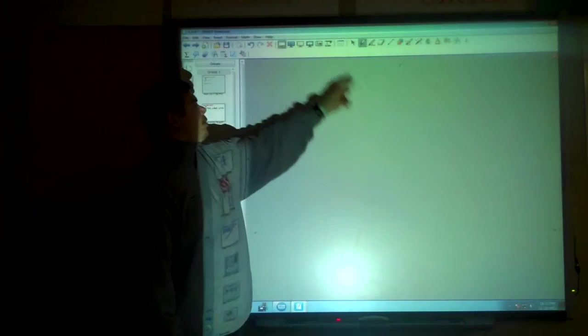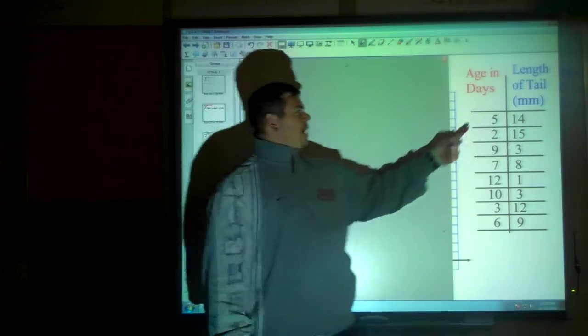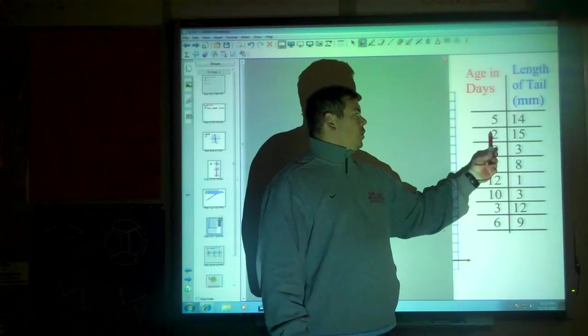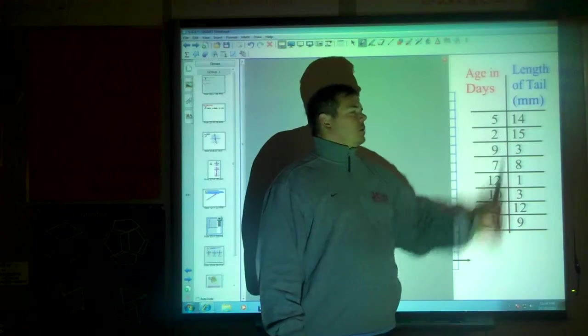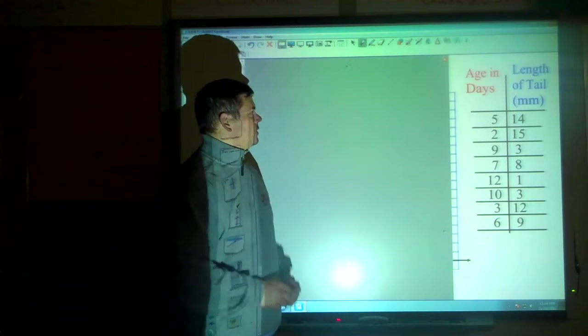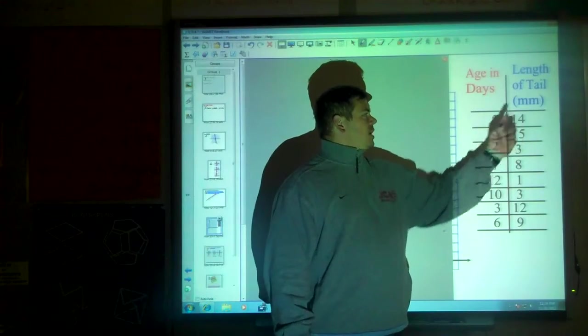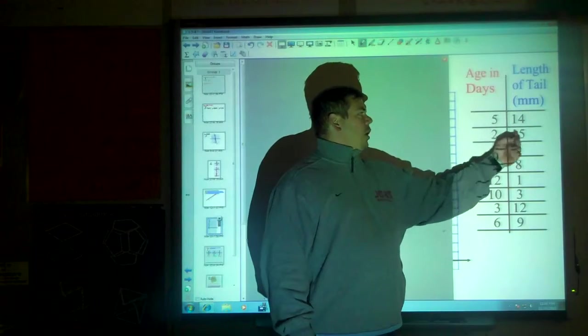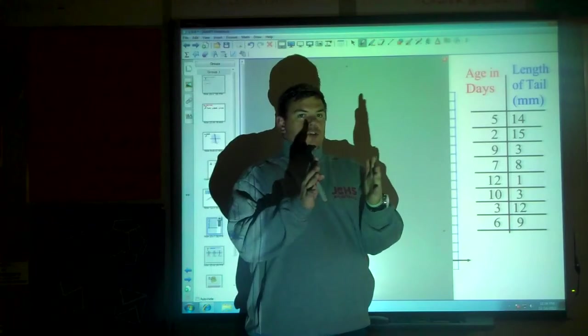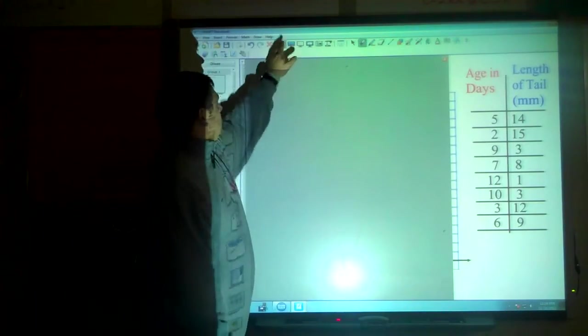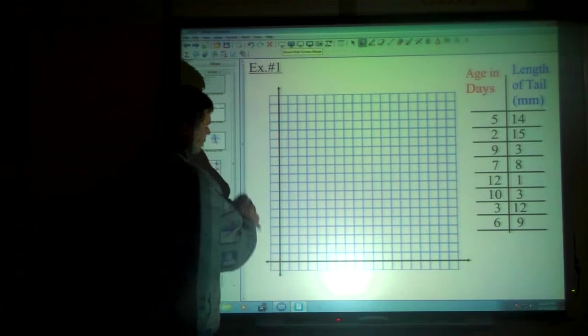This particular situation has to do with tadpoles. These are the ages of the tadpoles in days, so a five-day-old, a two-day-old, a nine-day-old, etc. This is the length of the tail in millimeters. The length of the tail for the five-day-old tadpole is 14 millimeters. The two-day-old was longer, because remember, the tadpole, as it gets older, the tail is actually shrinking as it becomes a frog. So in terms of a graph, you would look at this. It might be a good idea to graph these coordinates.